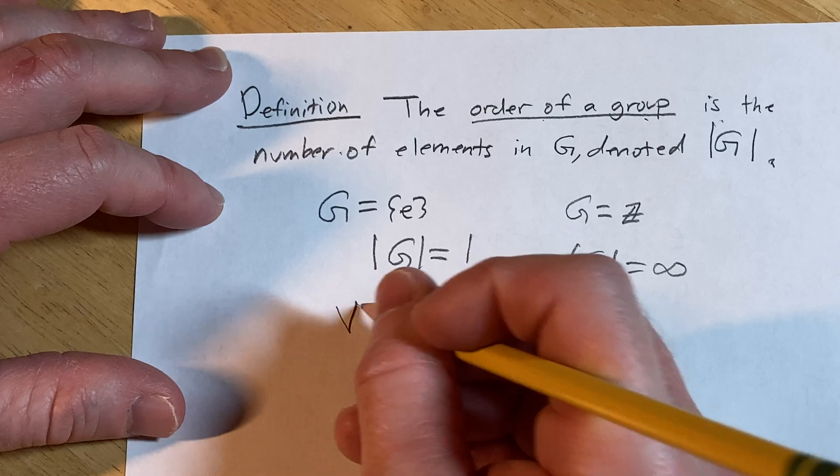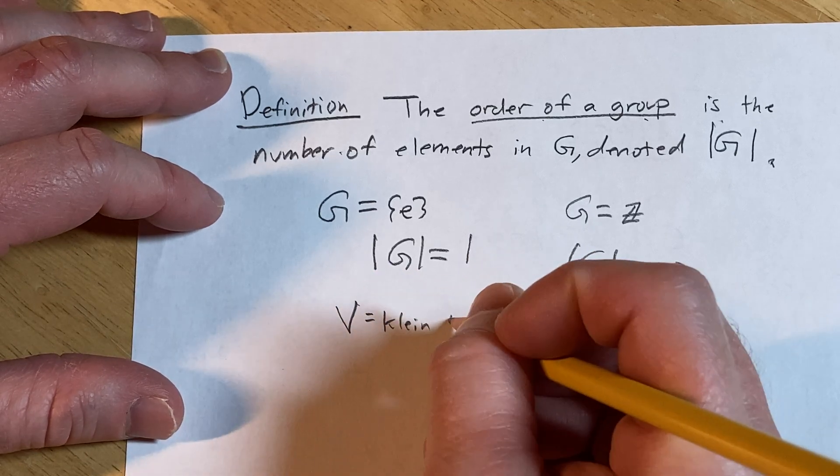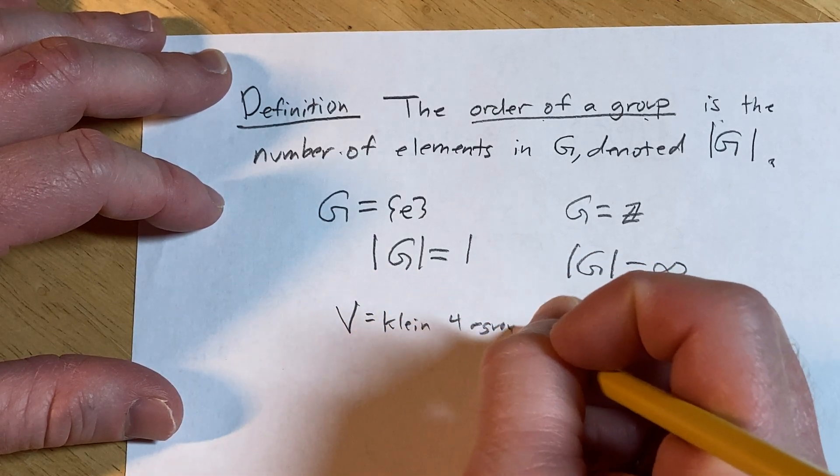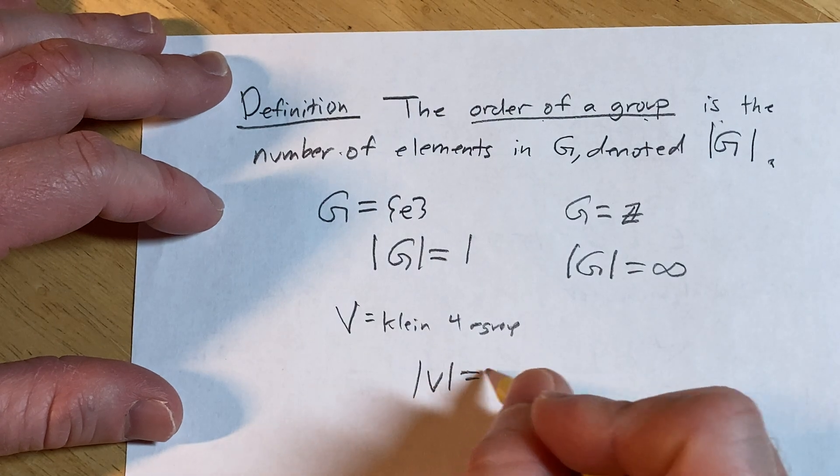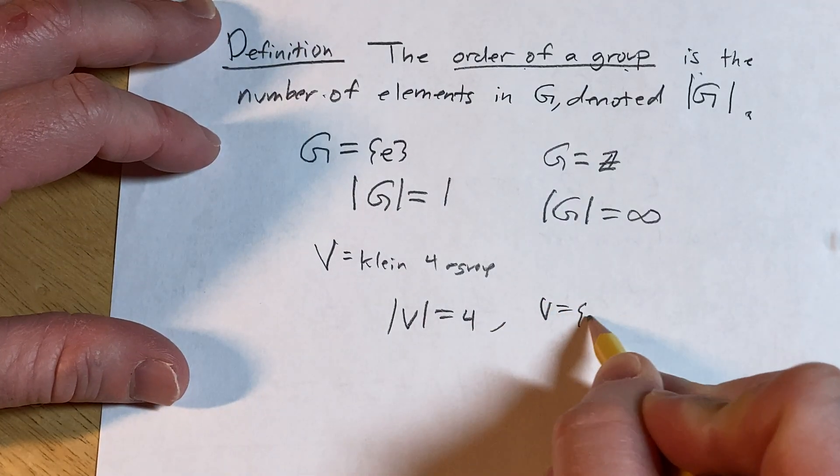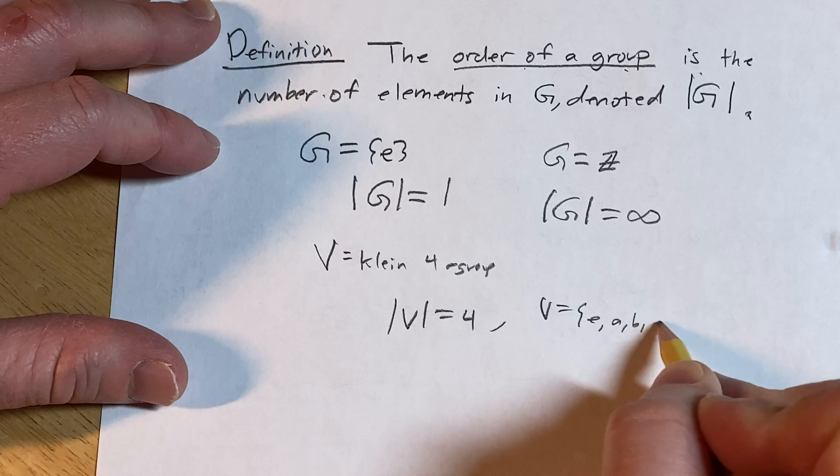If instead V is the Klein four group, then in this case, V is equal to 4, because the Klein four group contains 4 elements, E, A, B, and C.